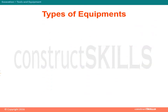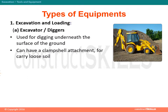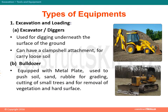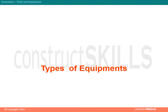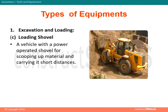Types of equipment can be further classified. First, excavation and loading equipment. A. The excavator or diggers are used for digging underneath the surface of the ground and can have a clamshell attachment for carrying loose soil. B. Bulldozer is equipped with a metal plate used to push soil, sand, and rubble for grading, cutting of small trees, and for removal of vegetation and hard surfaces. C. Loading shovel is a vehicle with a power-operated shovel for scooping up material and carrying it short distances.